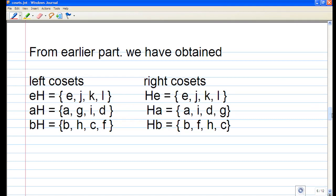Based on this definition, from the earlier part we obtain that left cosets are eH, aH, bH and the contents are given, and the right cosets are He, Ha, and Hb, the contents also given there.